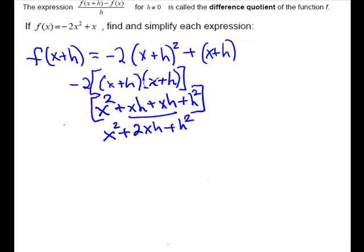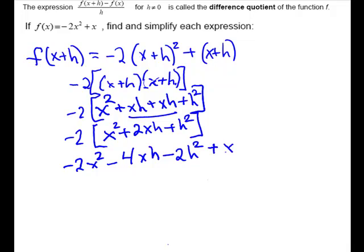And I'm going to distribute my minus 2 to all of that. So I have minus 2x squared minus 4xh minus 2h squared. That takes care of our first piece. And we're still working on this with the f of x plus h. So we have a plus outside the x plus h. That means it's not going to change it. I can just bring those separate pieces down. This is f of x plus h.